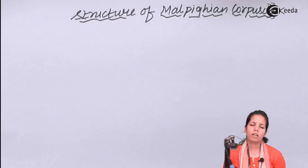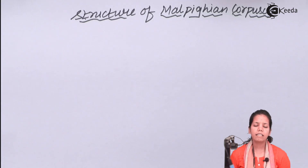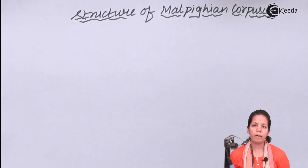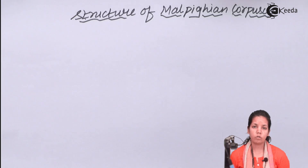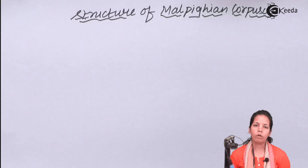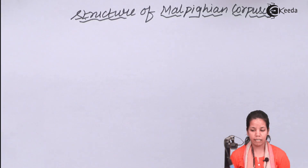If you see the structure of Malpighian corpuscles, it is a double or cup-shaped hollow structure. Being a cup-shaped hollow structure, the outer layer is termed as the parietal layer whereas the inner layer is known as the visceral layer. The outer parietal layer is made up of a single lining of squamous cells, whereas the inner layer is made up of podocyte cells.